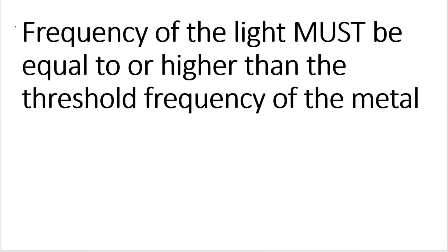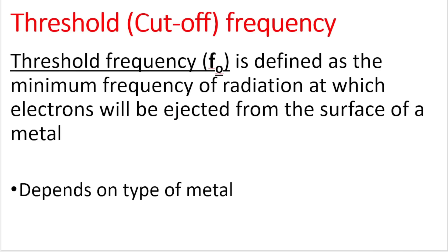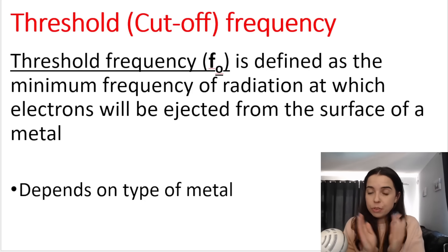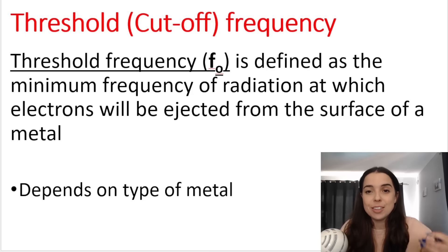The reason is that the frequency of the light must be equal to or higher than what we call the threshold frequency of the metal. All different types of metals have a threshold frequency, or cutoff frequency — this is the minimum frequency of radiation at which electrons will be ejected from the surface of that particular metal.